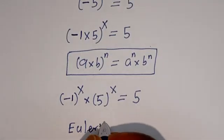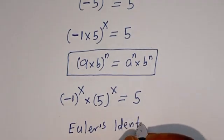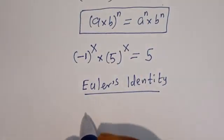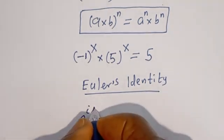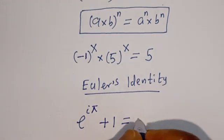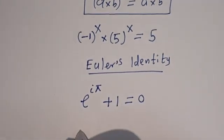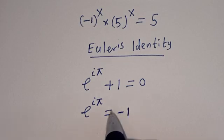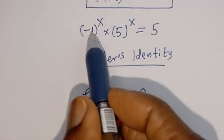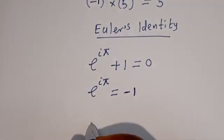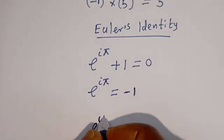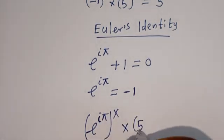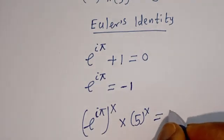Now, let's make use of Euler's identity. From Euler's identity, we have e to the power of i pi plus 1 is equal to 0. Let's take this 1 to the other side: e to the power of i pi is equal to minus 1. Anywhere you see minus 1, you substitute this e to the power of i pi. Then, back to this — minus 1 is going to be e to the power of i pi. This can be written as e to the power of i pi, all to the power of s, multiplied by 5 to the power of s is equal to 5.